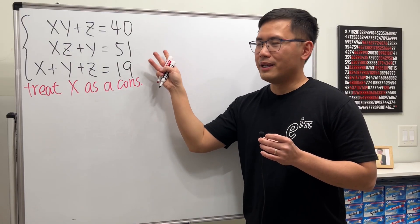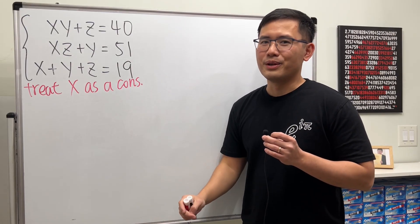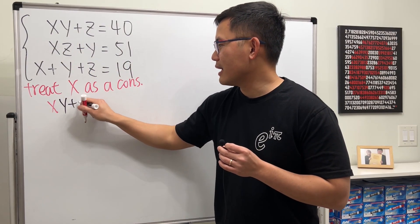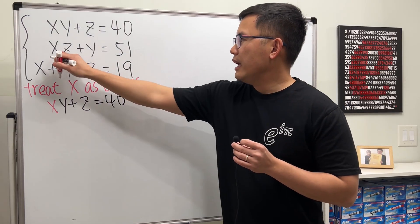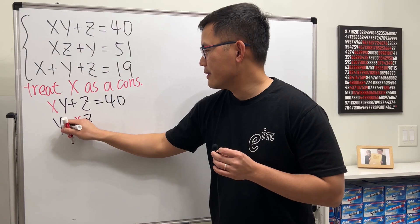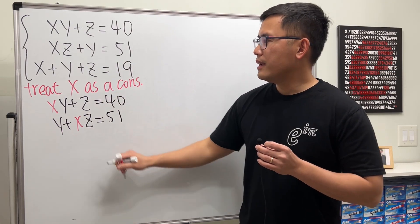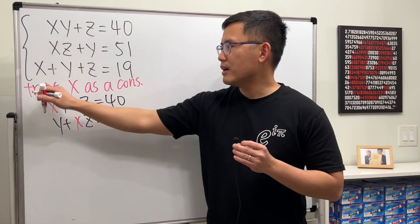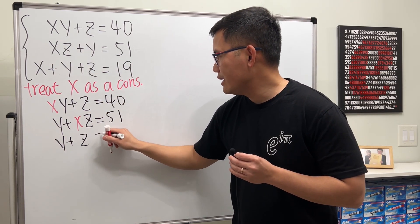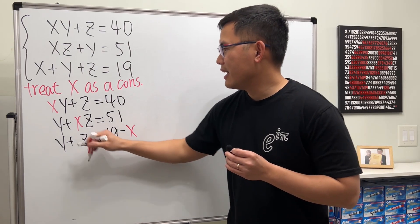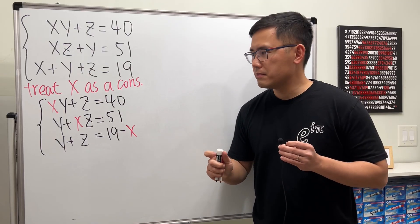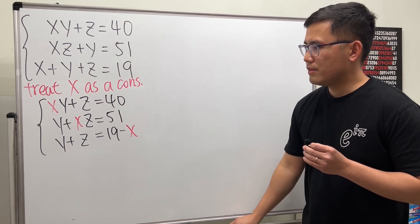We can narrow this down to a 3×2 system of equations. Let me rewrite it here: x times y plus z equals 40, x times z plus y equals 51, and y plus z equals 19 minus x. Now we have a 3×2 system of equations.